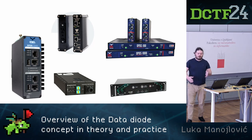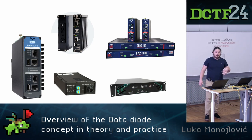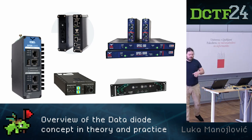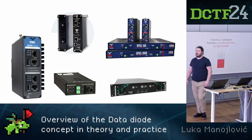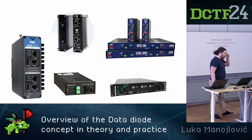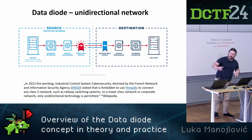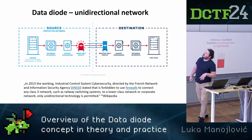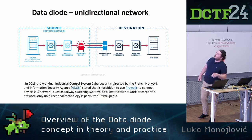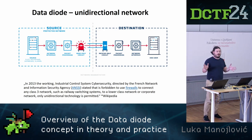If you decide to make something really absolutely reliable and certified — because companies that would like to buy something like this need certified equipment to comply with standards — that adds cost. For example, the French network information security agency has forbidden the use of firewalls to connect any Class 3 network such as railway switching systems. They only allow so-called unidirectional technology. So, data diodes — unidirectional, only one way.